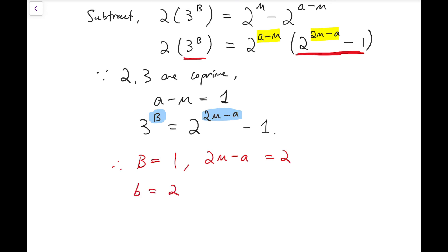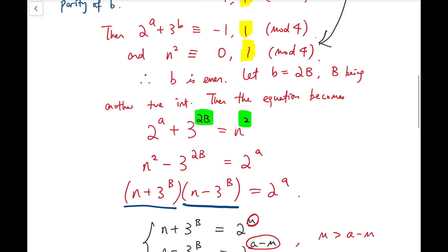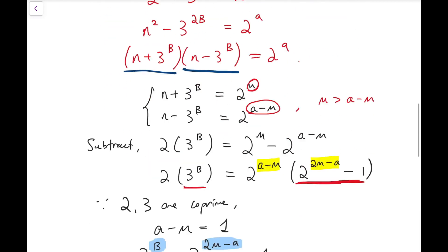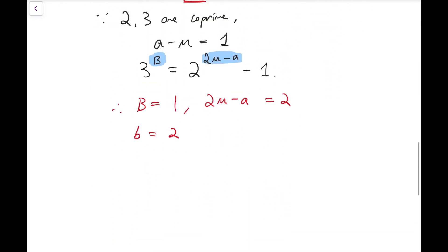Now the big B equals 1 implies that the small b equals to 2, as we have defined previously over here, that small b equals to 2 times big B.